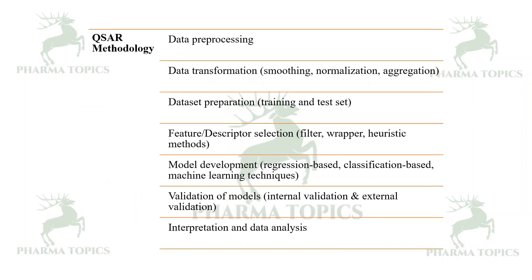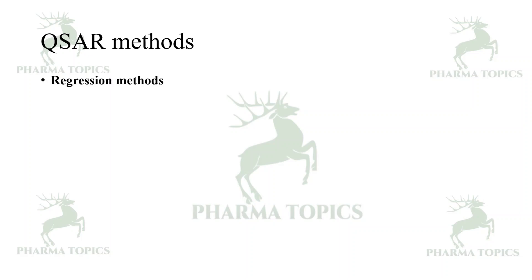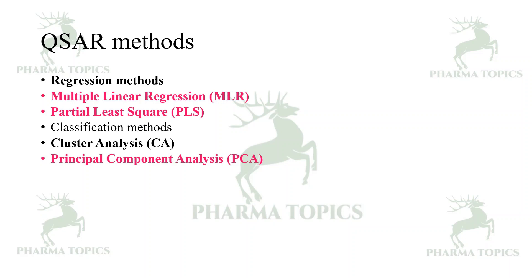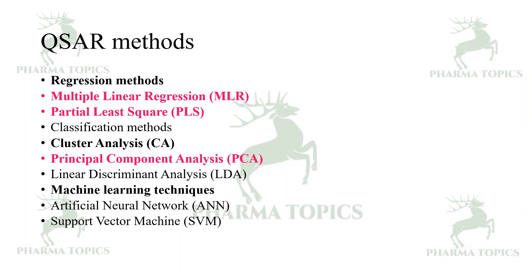The QSAR methodology involves: (1) data processing — smoothing, normalization, and aggregation; (2) data set preparation — dividing into a training set and a test set; (3) feature/descriptor selection — using filter, wrapper, or heuristic methods; (4) model development — using regression-based, classification-based, or machine learning techniques; (5) model validation — internal and external validation; and (6) interpretation and analysis. QSAR methods include multiple linear regression (MLR), partial least squares (PLS), cluster analysis, principal component analysis (PCA), linear discriminant analysis (LDA), artificial neural networks (ANN), support vector machines (SVM), and gene expression programming.